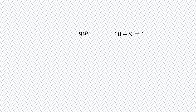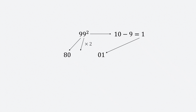Final example is 99 squared. We won't square 9 directly — do 10 minus 9 first, you get 1. Square 1 to get 01. 9 squared minus 1, so 80. Then do 9 times 2, which is 18. The last two digits of the final answer will be 01, and the first two will be 80 plus 18, which is 98. So, the square of 99 is 9801.